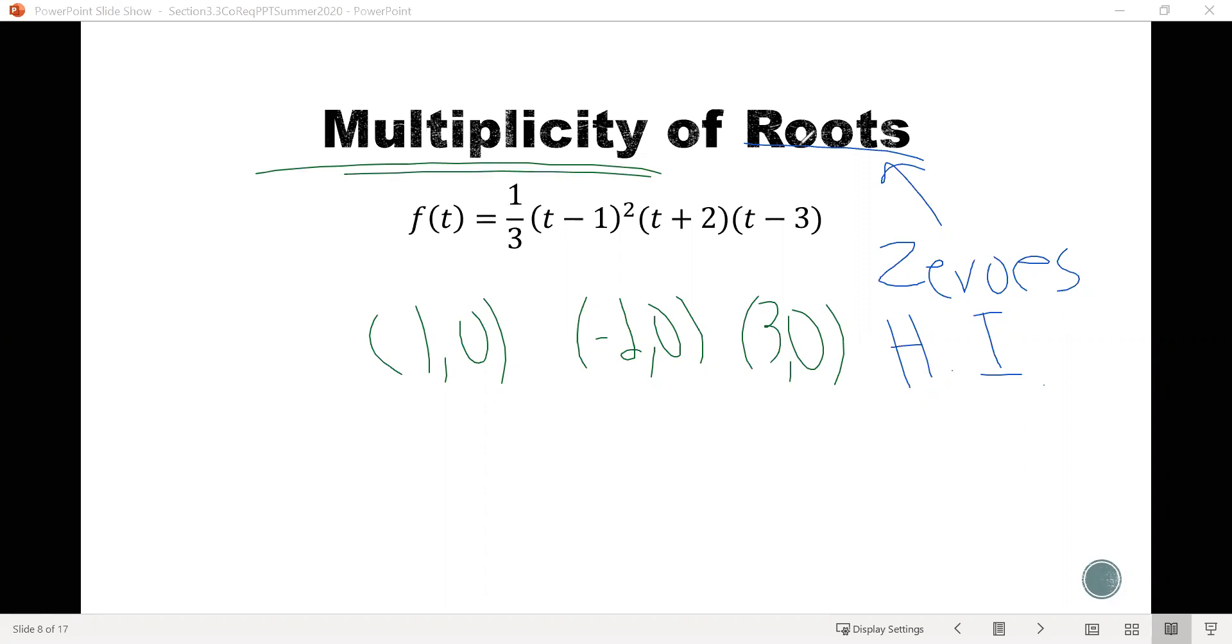But when we say this term multiplicity, what we're referring to is the power on the factor that corresponds to that horizontal intercept. So let me write here, multiplicity. We're going to list out the multiplicities for each of these zeros, but let me explain what they mean. So if you look at the first one, the 1, 0, that comes from this term right here, the t minus 1 squared. And notice that that factor there has a power of 2, so we know the multiplicity of 1, 0 is 2.